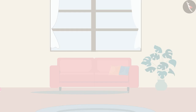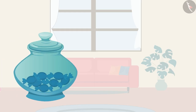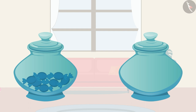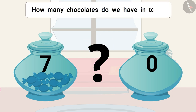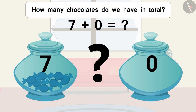Children, now you find the answer to this exciting question. In one jar there are 7 chocolates, and in the other jar there are 0 chocolates. How many chocolates do we have in total? Find your answer and share it with your friends and family.